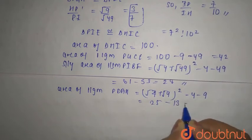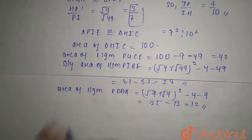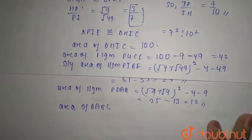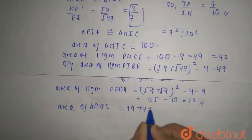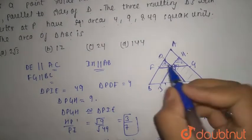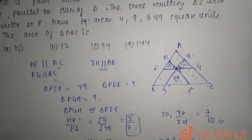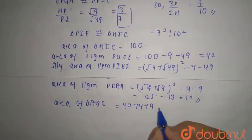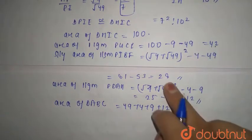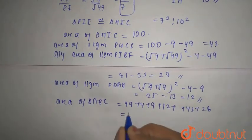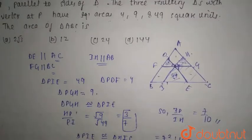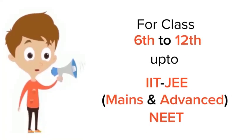Now to find the area of triangle ABC, we add all the areas: the three small triangles (49 + 4 + 9) and the three parallelograms (42 + 28 + 12), giving a total of 144. So the area of triangle ABC is 144 square units, and option D is correct.